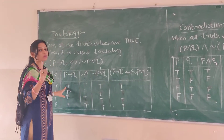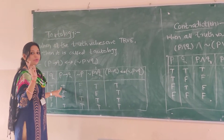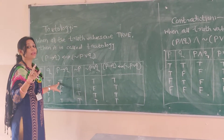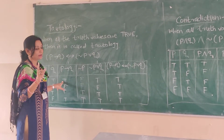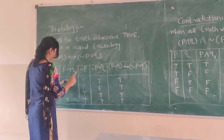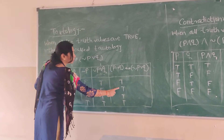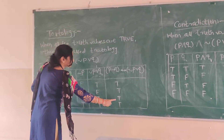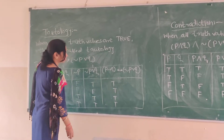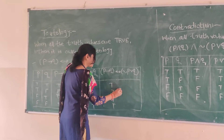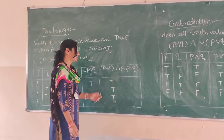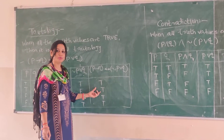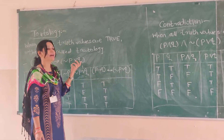In a biconditional statement, you get true when both truth values are the same or similar. So combining p→q (T, F, T, T) with ¬p∨q (F, T, T, T) by biconditional: true-true gives true, false-true gives true, true-true gives true, true-true gives true. The last column or output of this proposition contains all truth values true, that's why it is called tautology.